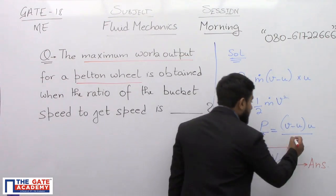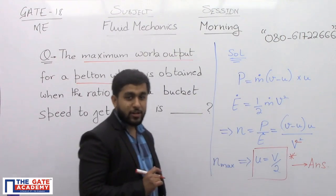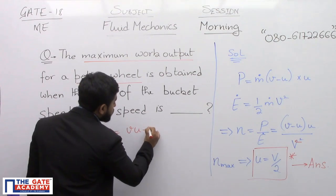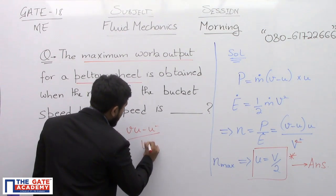I am sorry, there is a mistake here, this should be small v. When we talk of efficiency, this efficiency is nothing but it is v u minus u square by v square.